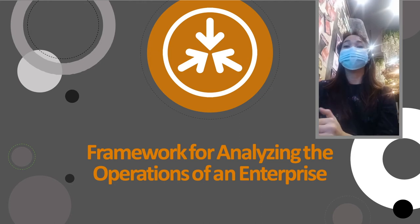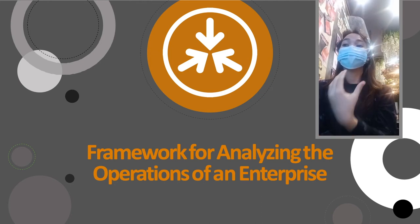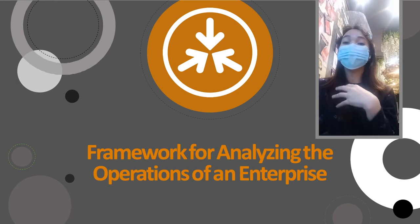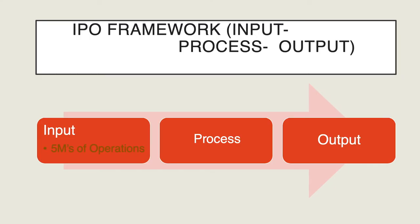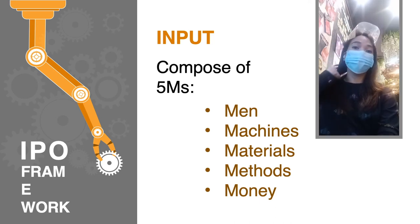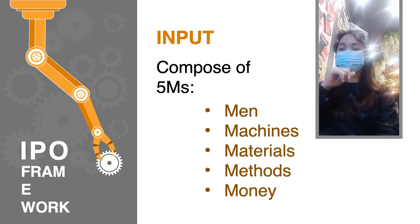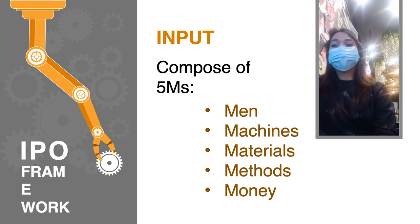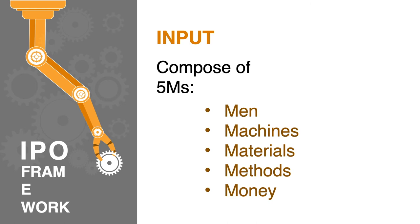The IPO model — input, process, and output framework — is used by different businesses to analyze their enterprises. As part of the input, we have the 5Ms of operations: men (manpower), machinery, materials, methods, and money. Some books use 6Ms, but this course uses 5Ms.